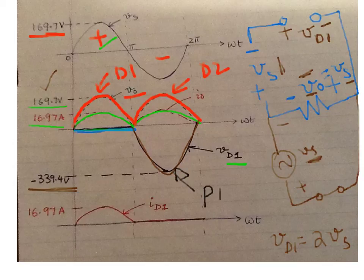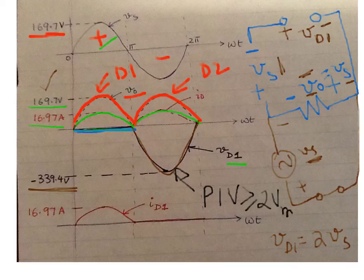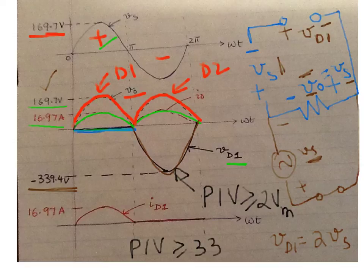This answers your PIV question. Your PIV rating, which is part six of this question, is greater than or equal to 339.4 volts.